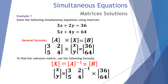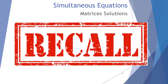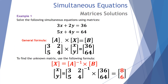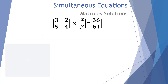So we substitute in our values: here's matrix A raised to the negative one — that's the inverse — and we multiply it by our total matrix of 36 and 64. We do that in our calculator and we end up with the answer 8 and 6. Let's recap the steps to make certain we understand how we go from the general format to our solution format.